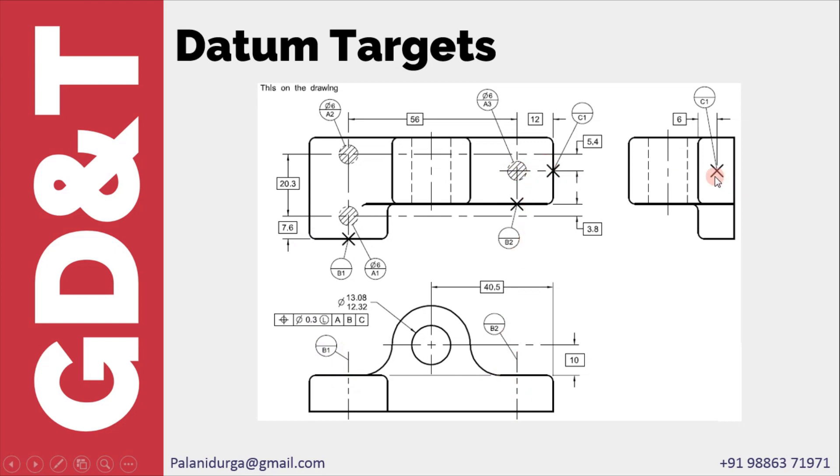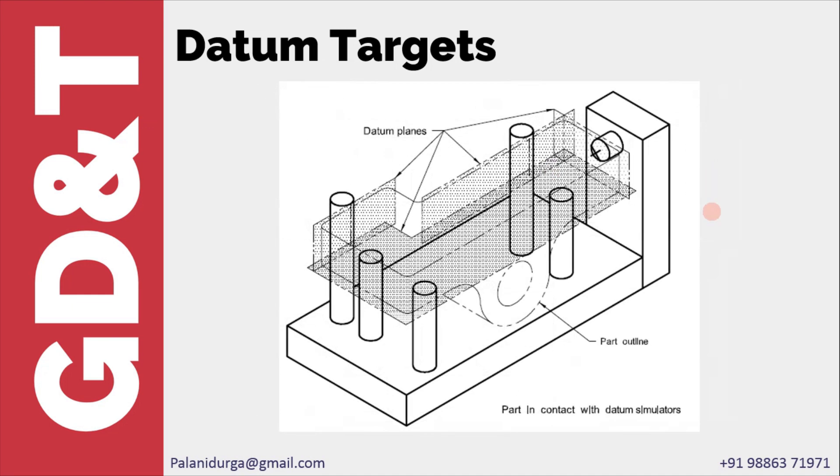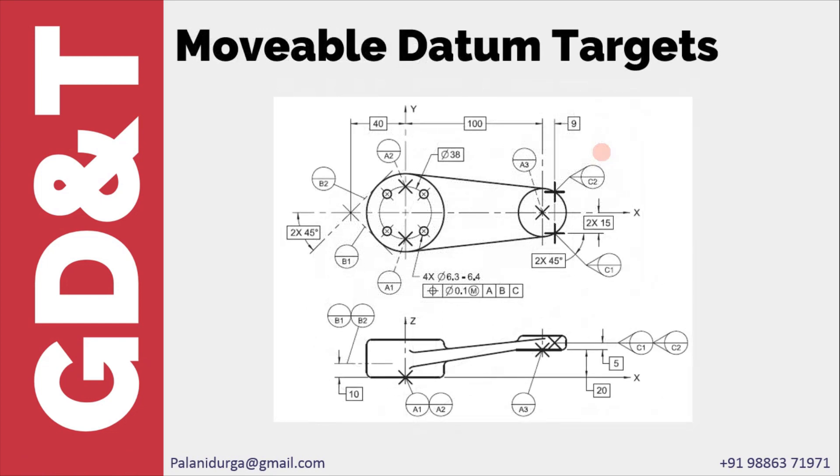If you have something like this in the drawing, then on the fixture or the gauge we have three pins with the diameter for resting, two pins with periphery touching to get a line contact, and one pin with the spherical surface or tip to get a point contact.